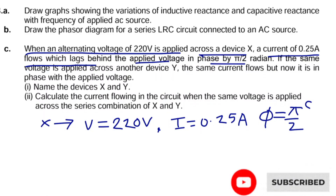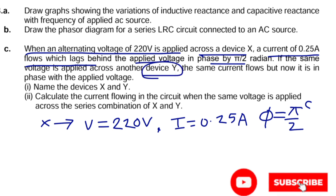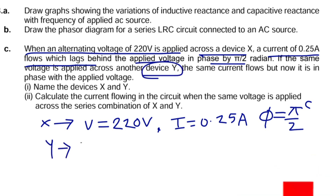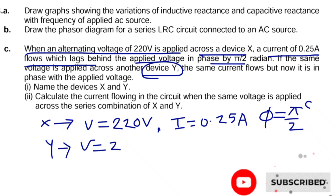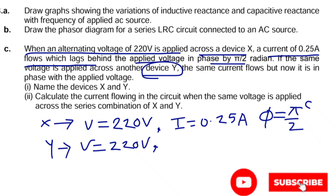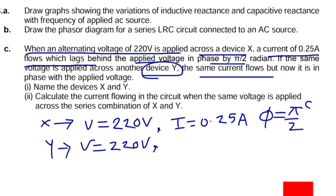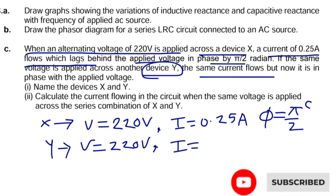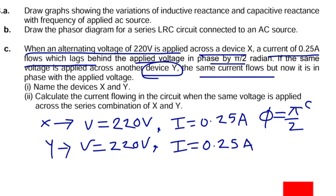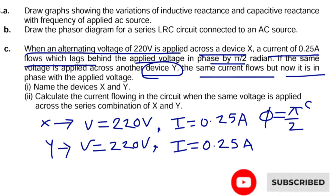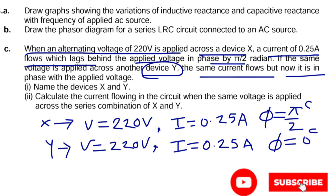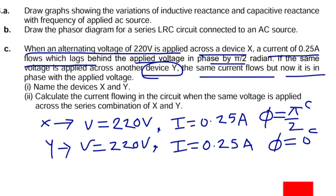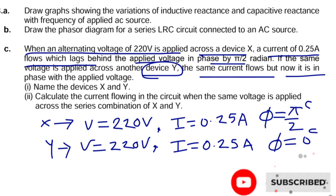Further, the same voltage of 220 volts is also supplied to another device Y. The same current of 0.25 ampere flows through device Y as well, but now the current is in phase with the voltage — meaning the phase angle between current and voltage in device Y is zero.